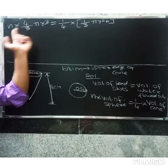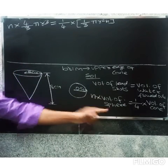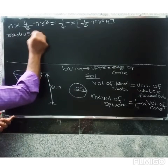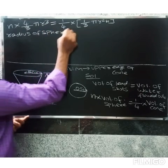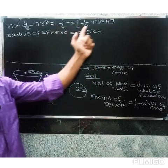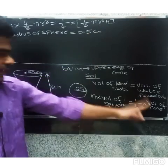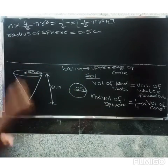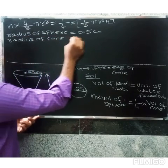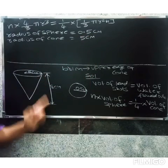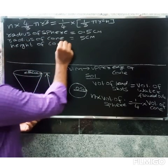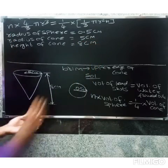The radius of the sphere is 0.5 centimeters. The radius of the cone is 5 centimeters, and the height of the cone is 8 centimeters. Now substitute these values into the formula.